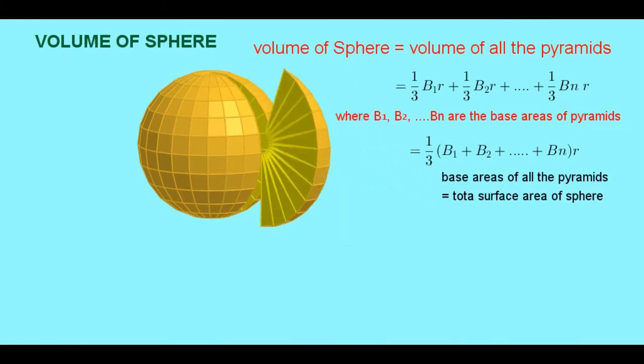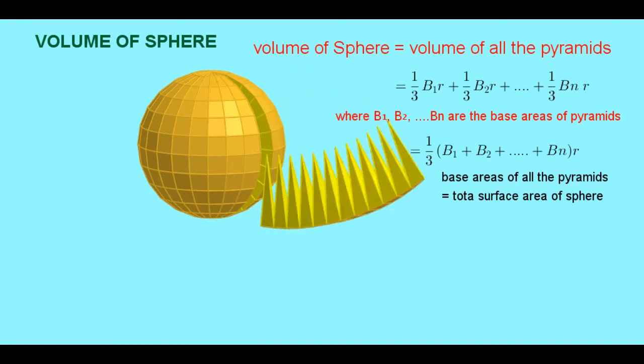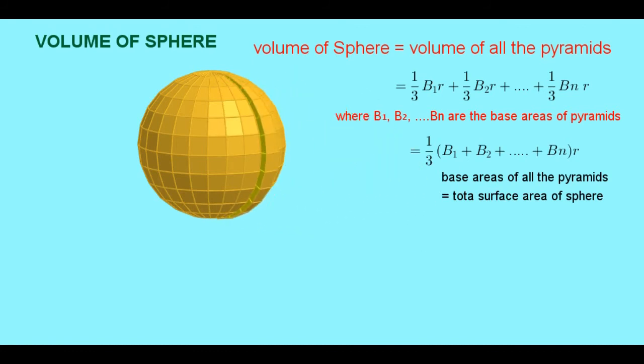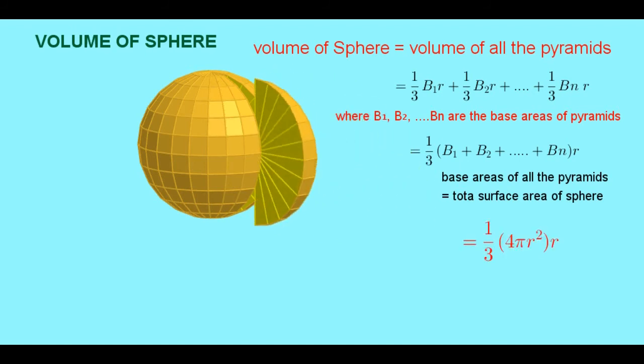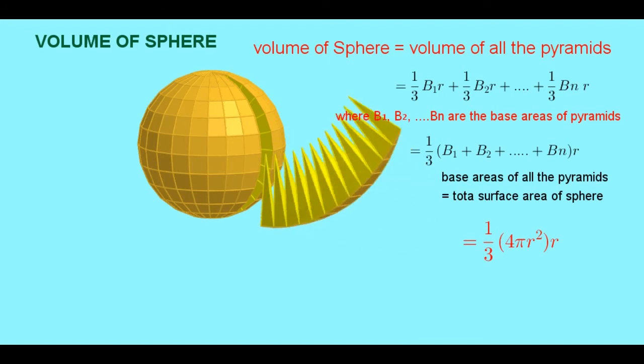Now base areas of all the pyramids gives us total surface area of sphere. By observing this, now we will get 1 by 3 into 4 pi r square into r, where 4 pi r square is the surface area